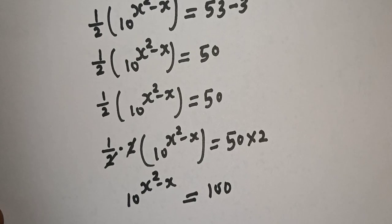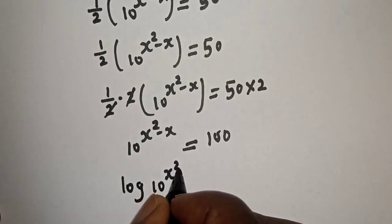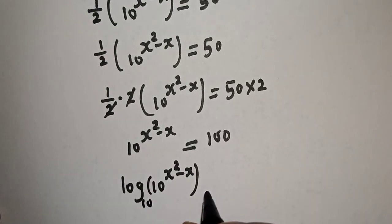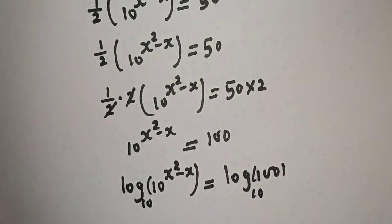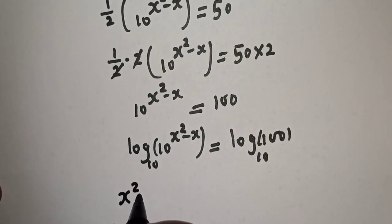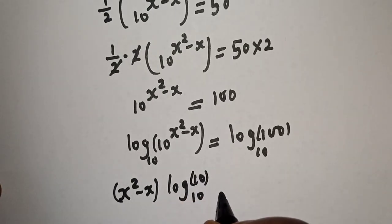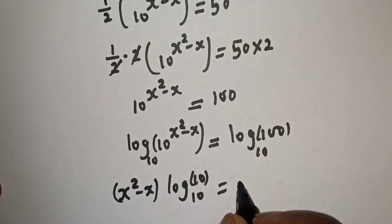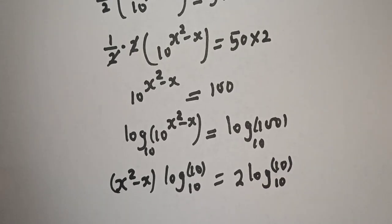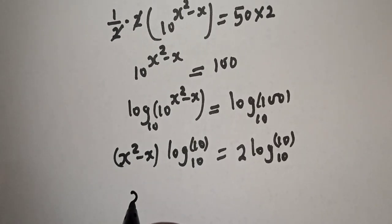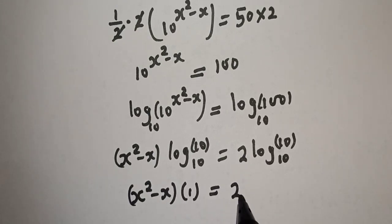Now let's take the log of both sides with base 10: log base 10 of 10^(s²−s) equals log base 10 of 100. This gives (s²−s)·log₁₀(10) = log₁₀(100). Since 100 = 10², we get (s²−s)·log₁₀(10) = 2·log₁₀(10). And since log₁₀(10) = 1, this simplifies to s²−s = 2.